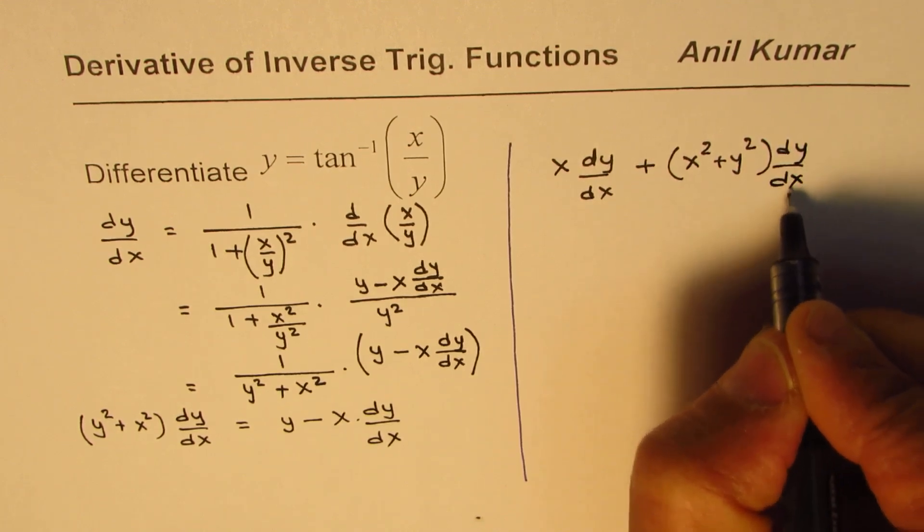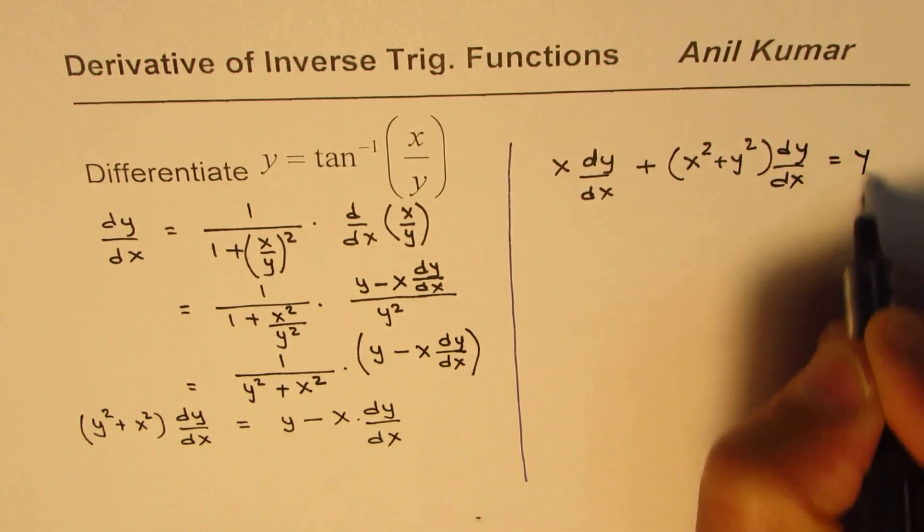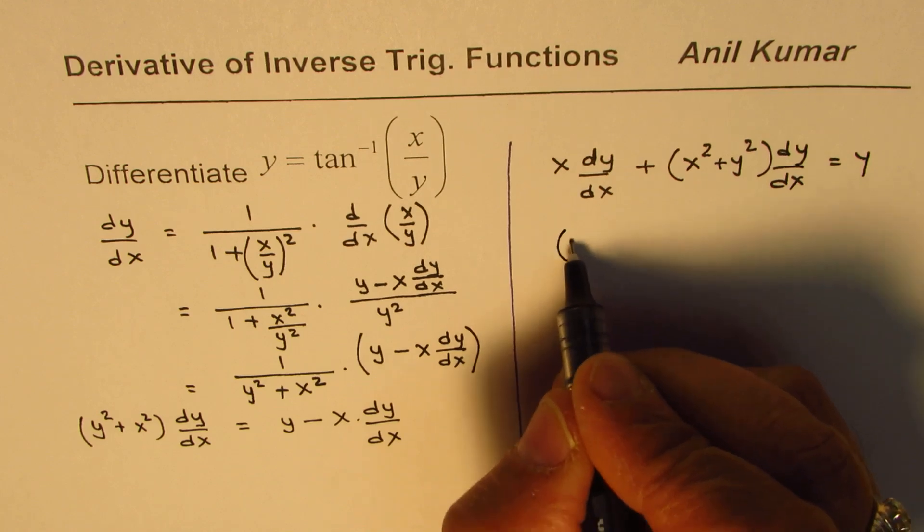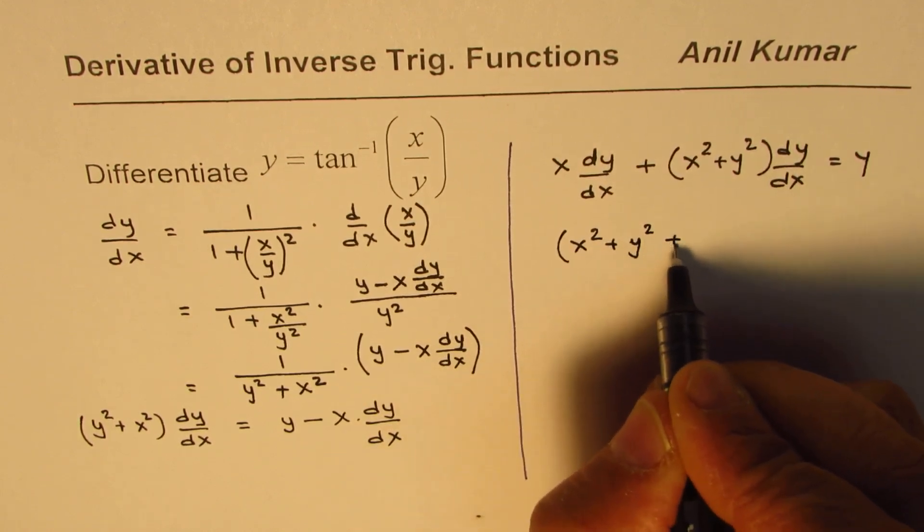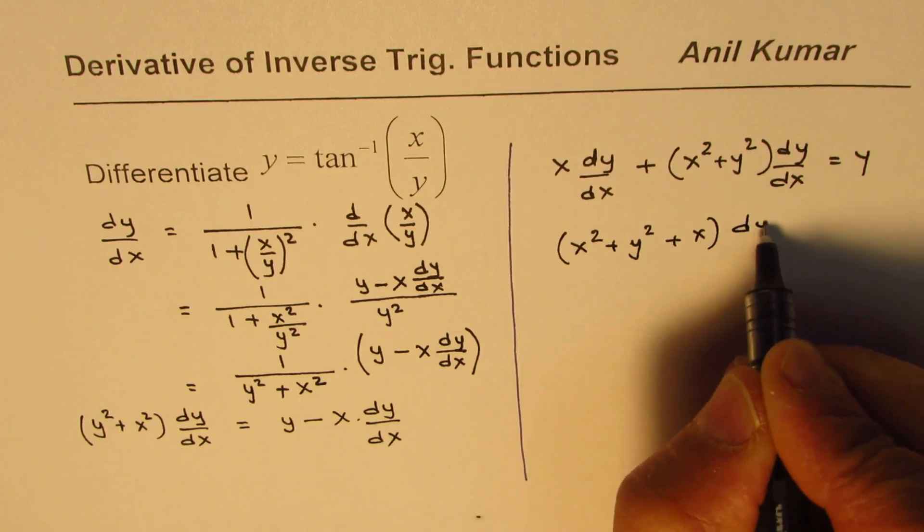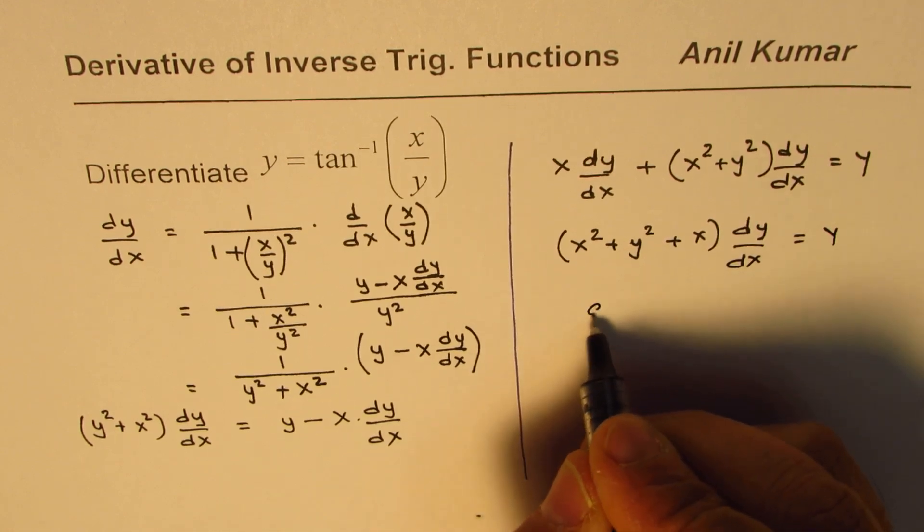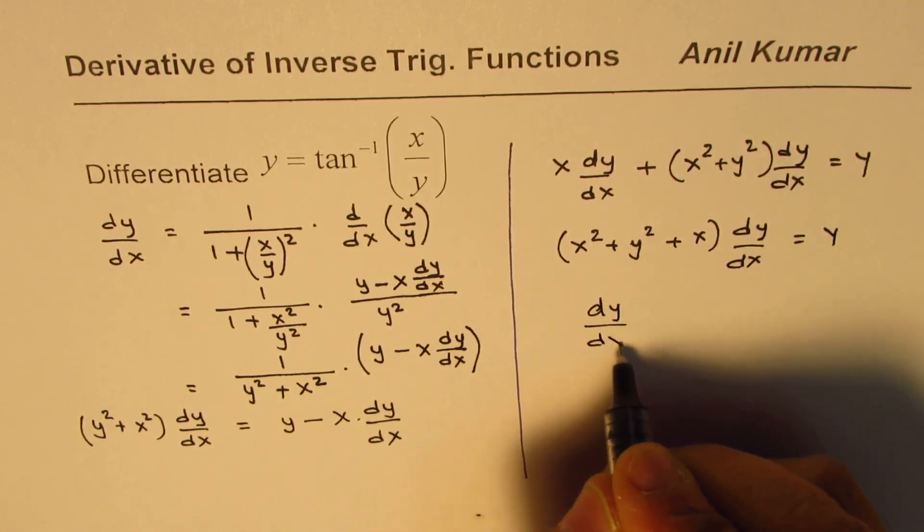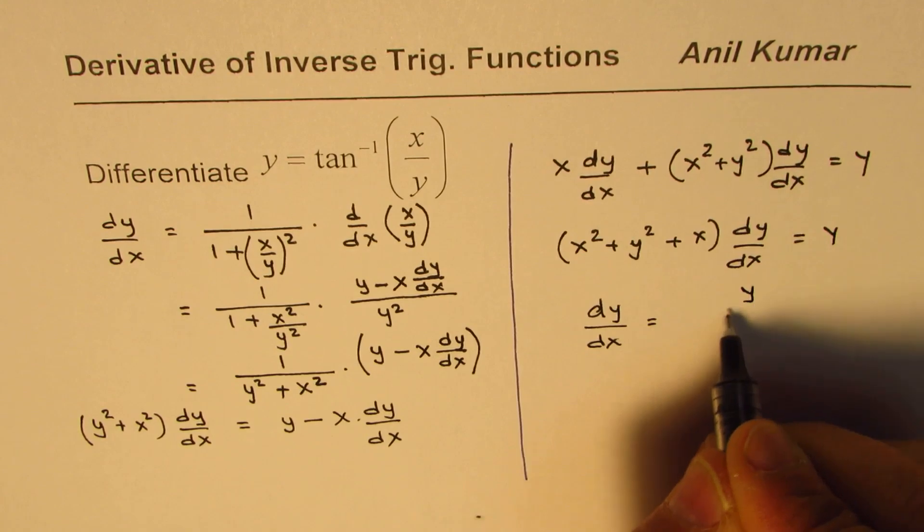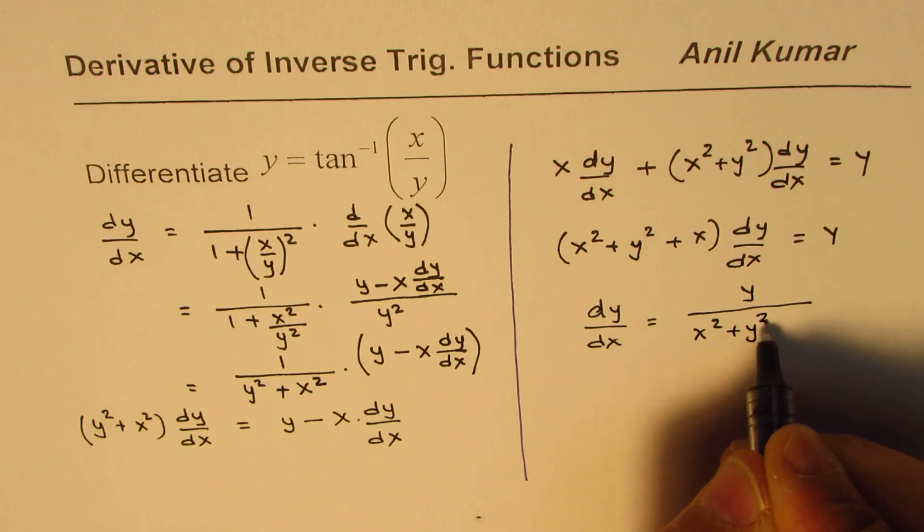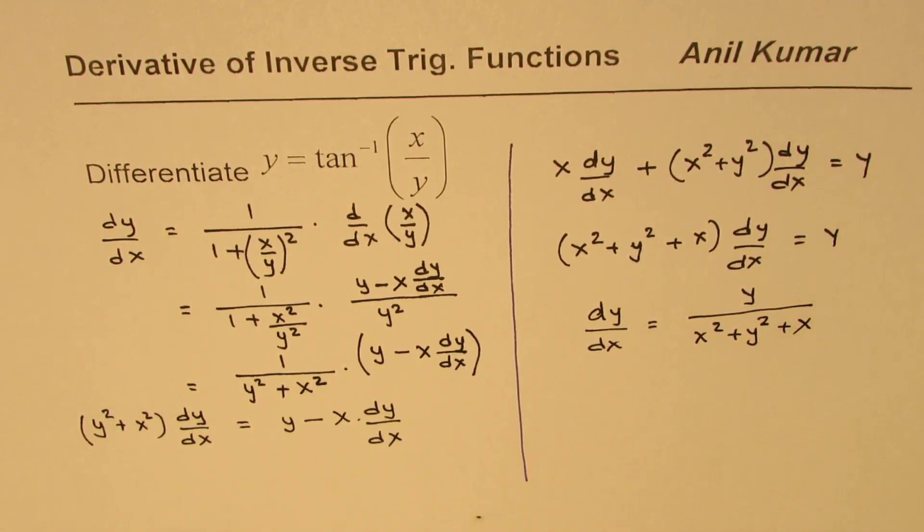Now dy/dx is common, so we can write this as x squared plus y squared plus x, dy/dx equals to y. Or dy/dx is equals to y divided by x squared plus y squared plus x. That is the solution for the given question.